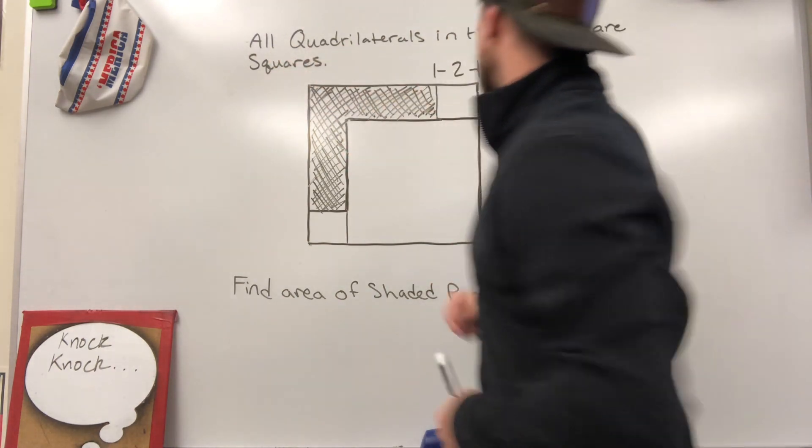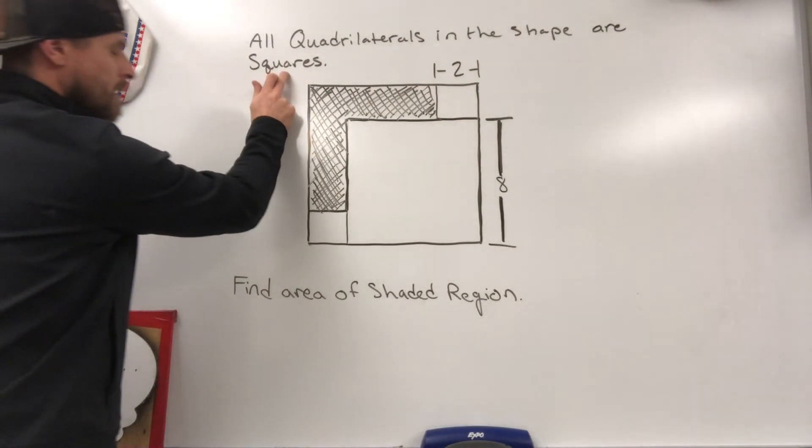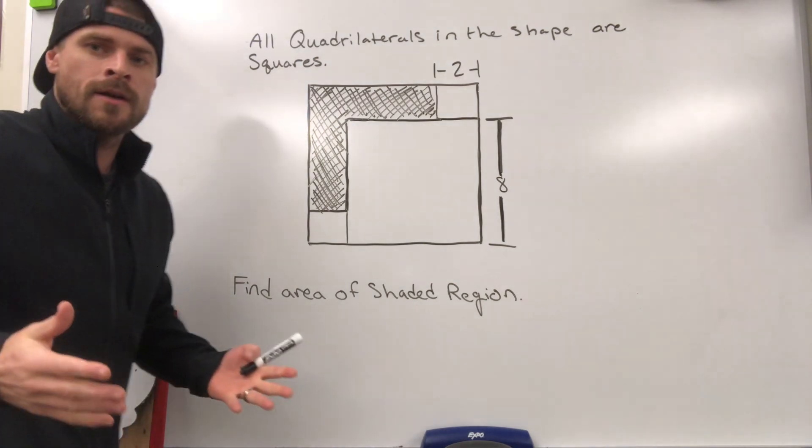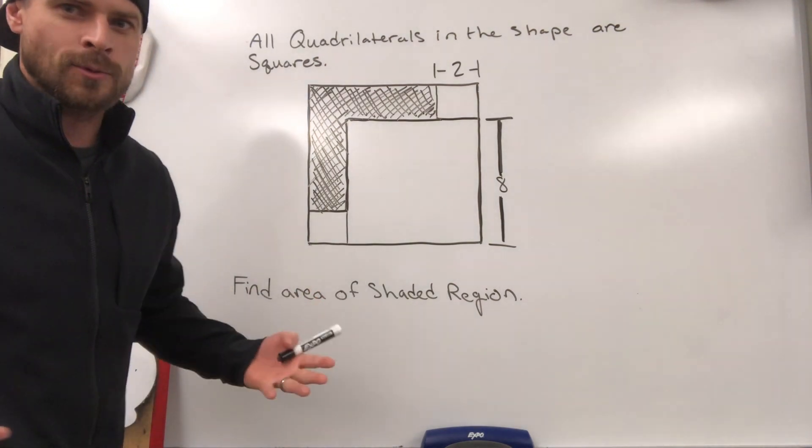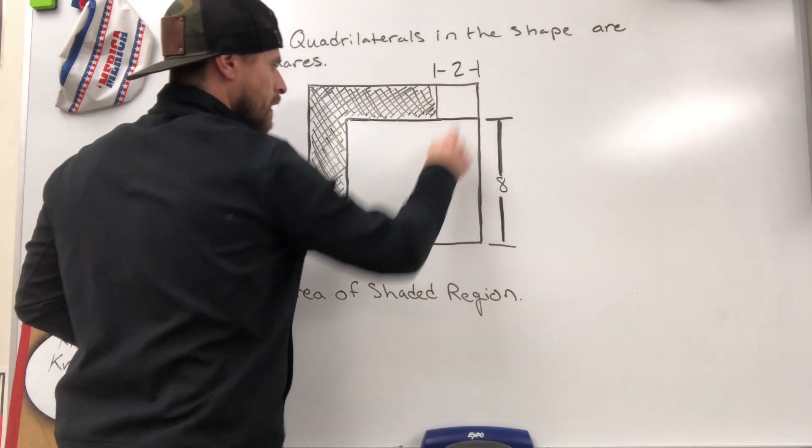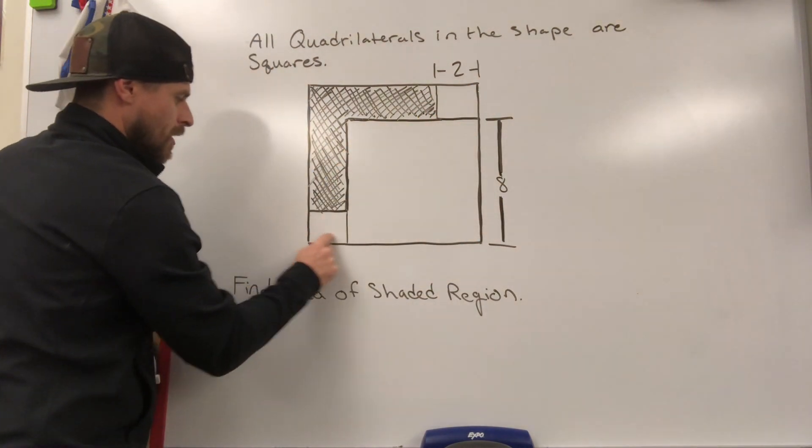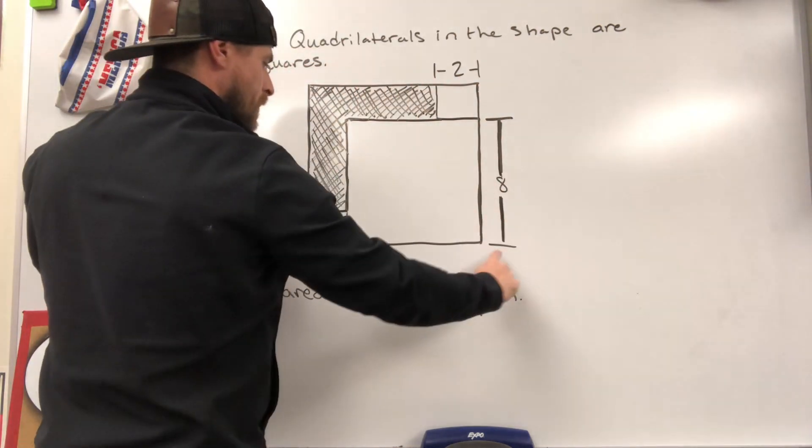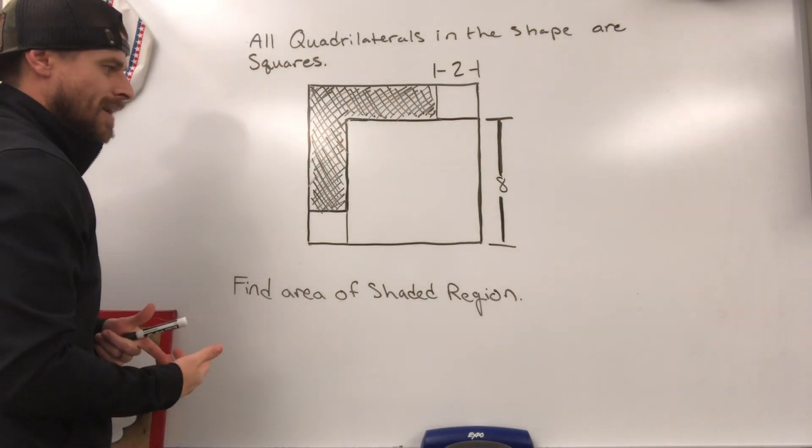All quadrilaterals in the shape are squares. Well, what do we know about squares? Squares have all equal sides. So if this right here is a quadrilateral, this right here is a quadrilateral, this is a quadrilateral, and then our big shape that makes it all is also a quadrilateral.